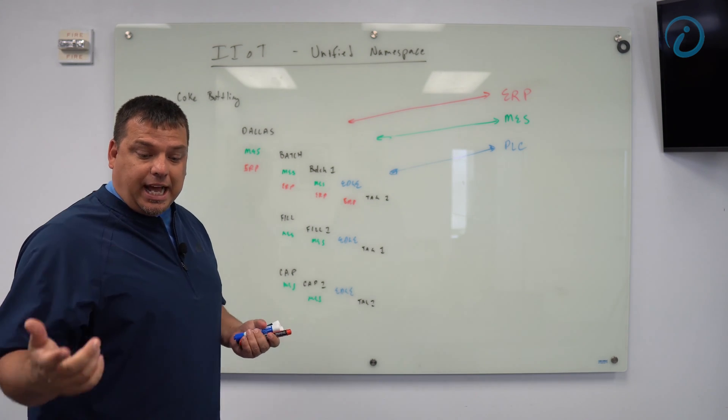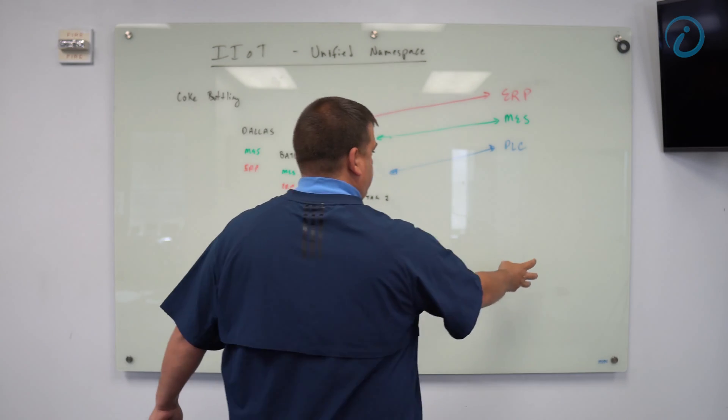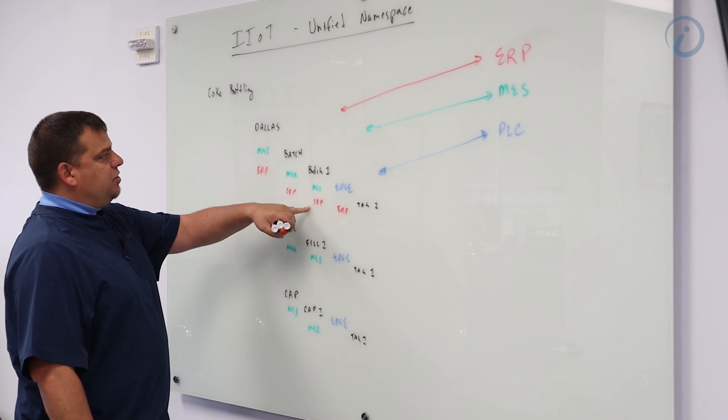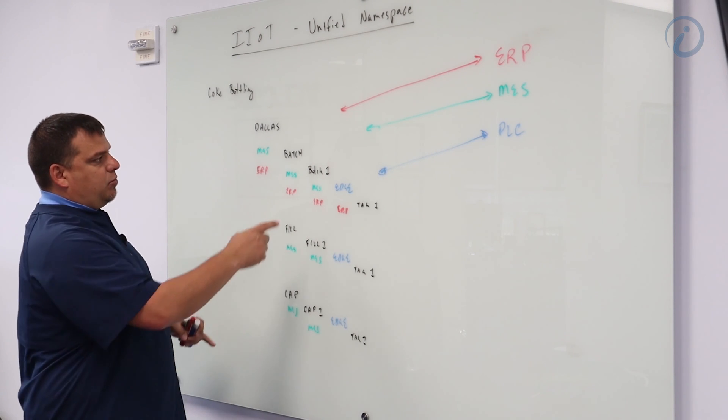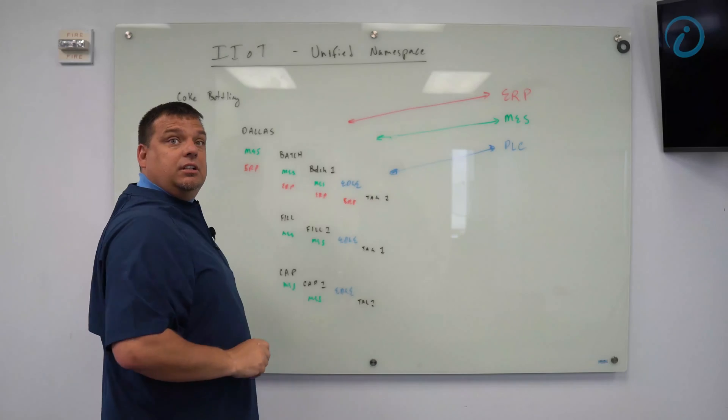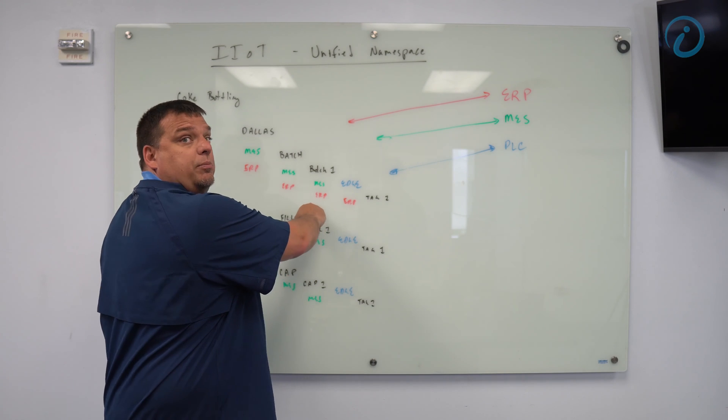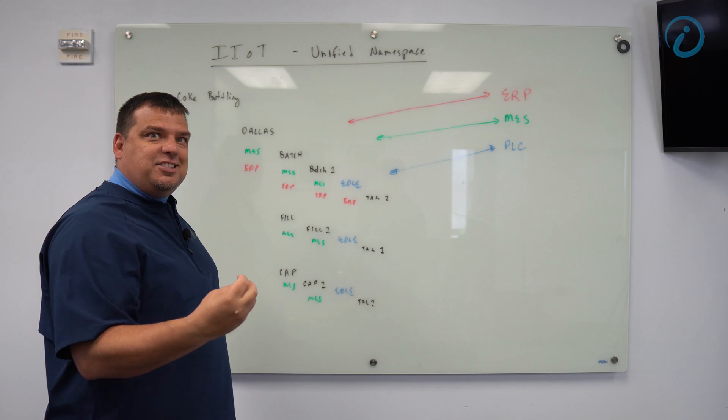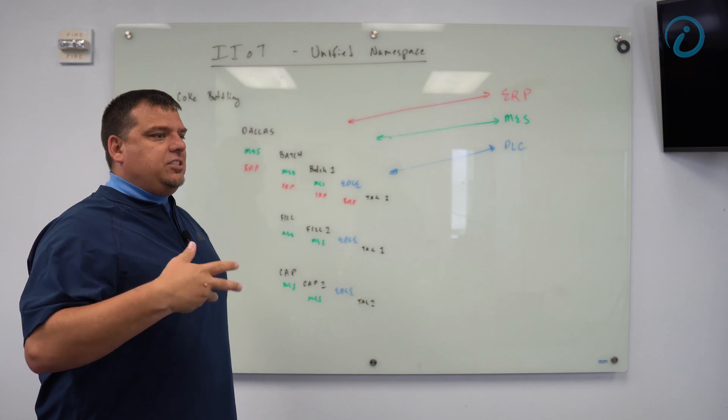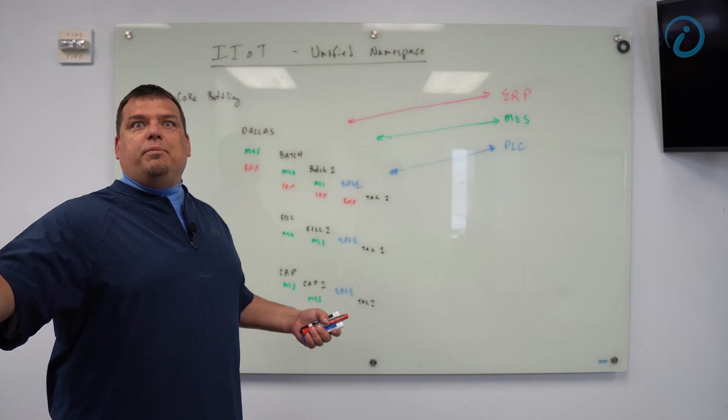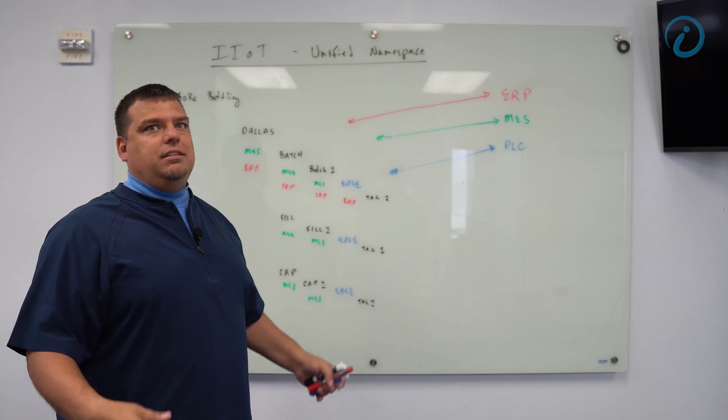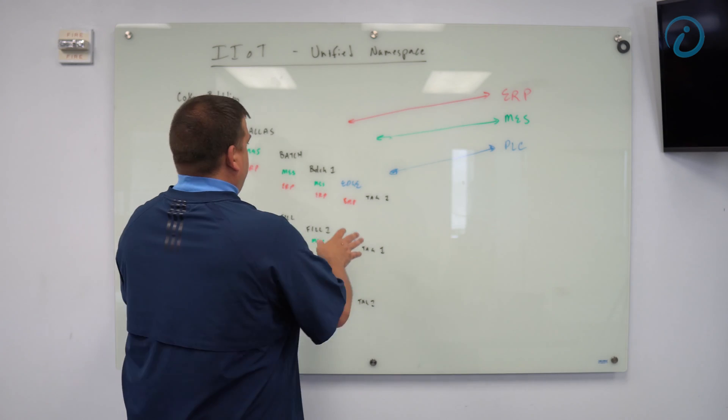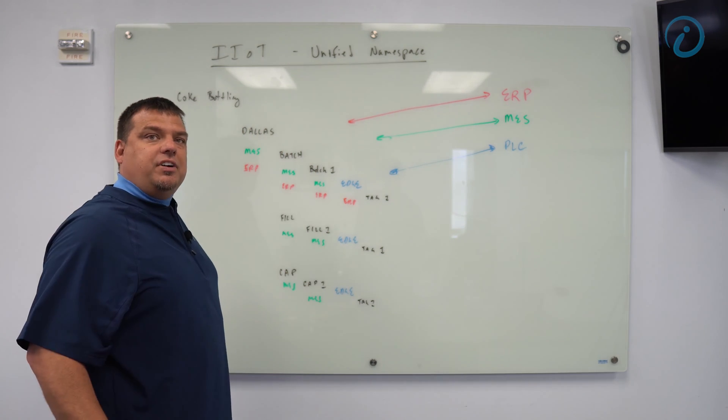So when I install my warehouse management system and my warehouse management system is handling inventory for, say, the raw materials for the batch, we may end up with a warehouse management, a WMS directory that contains a data set that contains the next five bags of raw material we're going to use to make the mix the coke. But this is the concept of the unified namespace.